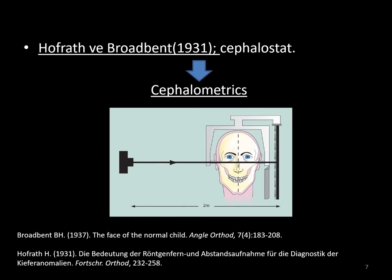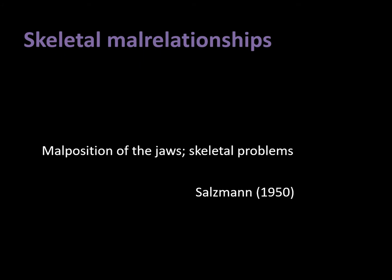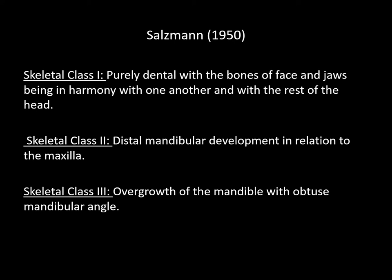With the invention of cephalostats by Broadbent and Hofrath, cephalometric measurements gained major importance and profile linear and angular parameters could be evaluated. In 1950, Angle's classification numbers were extended to refer to the skeletal jaw relationship by Sassman using the term skeletal malocclusion. Sassman was the first to classify the underlying skeletal problems causing malocclusions, defining skeletal Class 3 as overgrowth of the mandible with an obtuse mandibular angle.